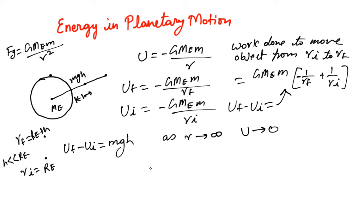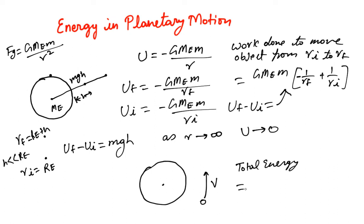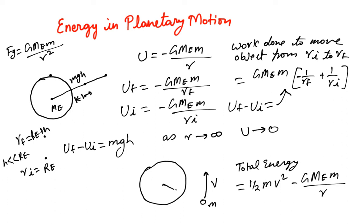Now let's talk about planetary motion. If the object is not still but moving with a velocity v — say a moon moving around the earth — the total energy is (1/2)mv² minus GMe*m/r, where r is the orbital distance.